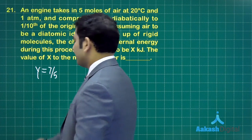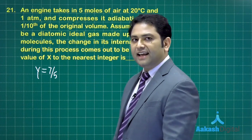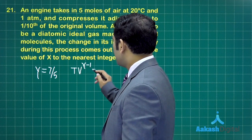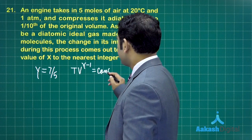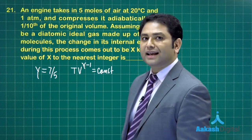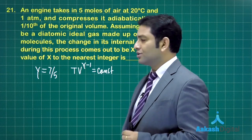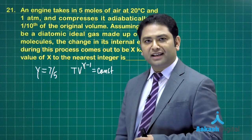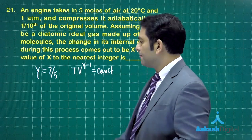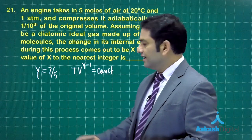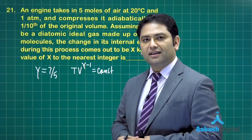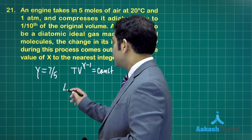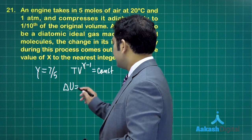It is adiabatic, so TV to the power gamma minus 1 is constant. Using this equation you can calculate the value of T2. Don't forget to convert T1 to kelvin: 20 degrees centigrade becomes 293 kelvin. That's the initial. V2 is V1 by 10. Here a little bit of calculation and effort is required.